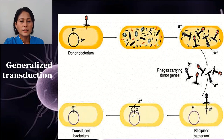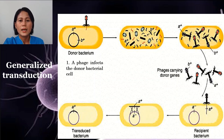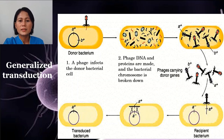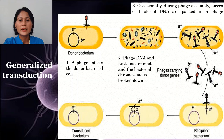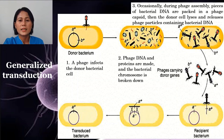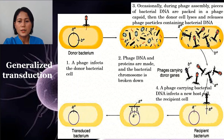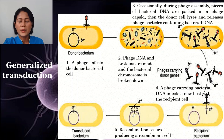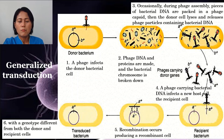In generalized transduction, first a phage infects the donor bacterial cell. Next, phage DNA and proteins are made and the bacterial chromosome is broken down. Occasionally during phage assembly, pieces of bacterial DNA are packed into a phage capsid. The donor cell then lyses and releases phage particles containing bacterial DNA. A phage carrying bacterial DNA infects a new host cell — the recipient cell. Recombination then occurs, producing a recombinant cell with a genotype different from both the donor and the recipient cell.